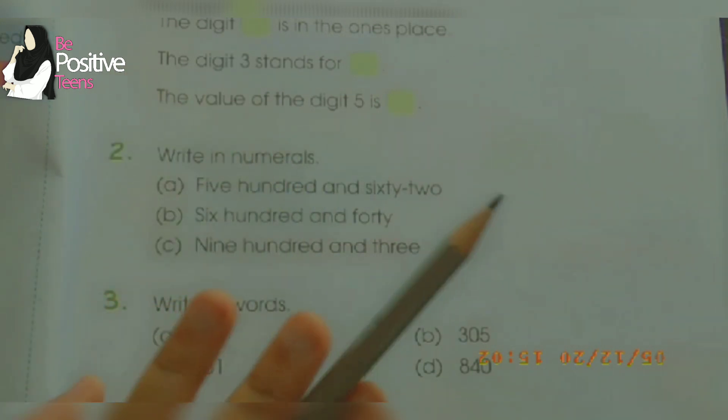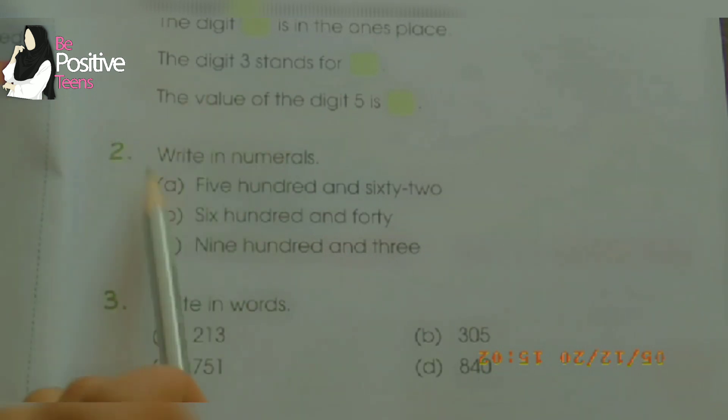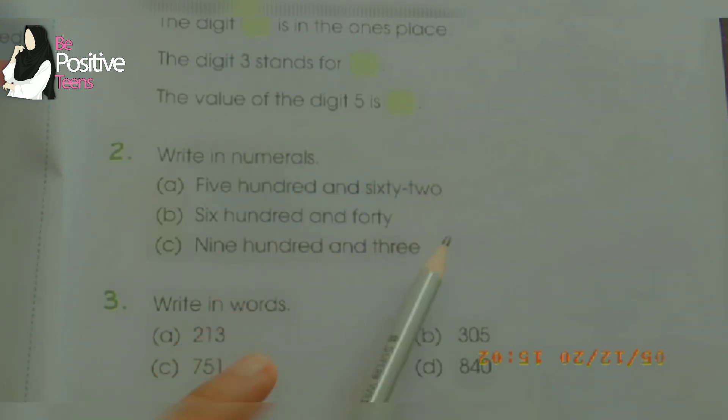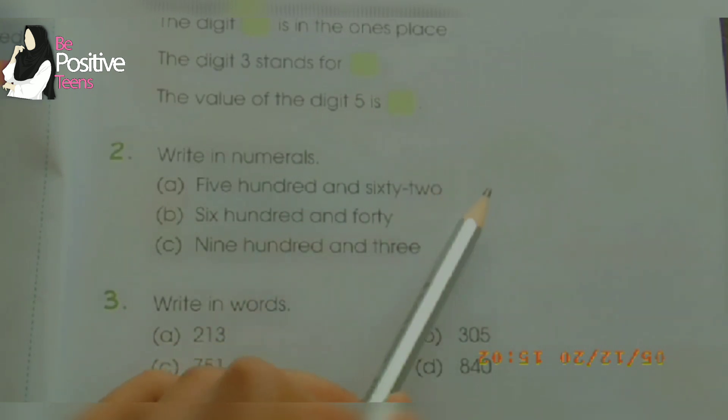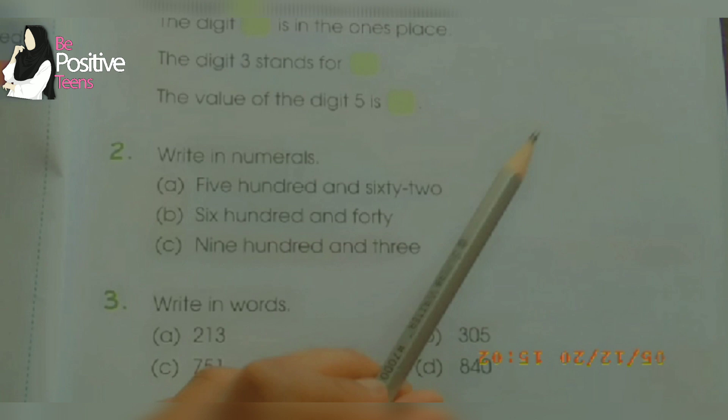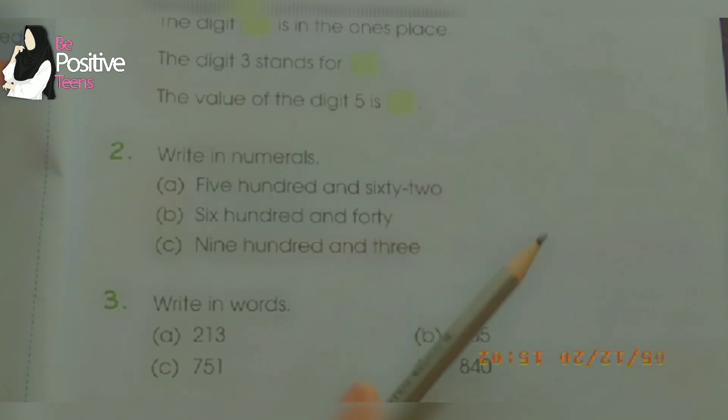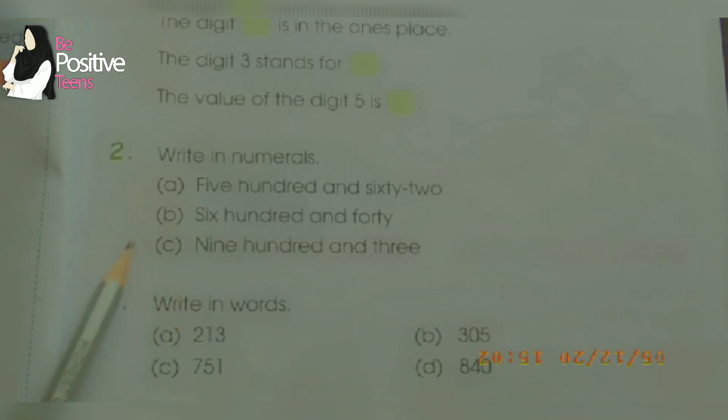Number two: write in numerals. We know what numerals are and what word form is. Five hundred and sixty-two — you draw a line and write in numerals: five hundred sixty-two, that is 562. The next one: six hundred and forty — six hundred and forty is 640. Part C you have to do yourself.